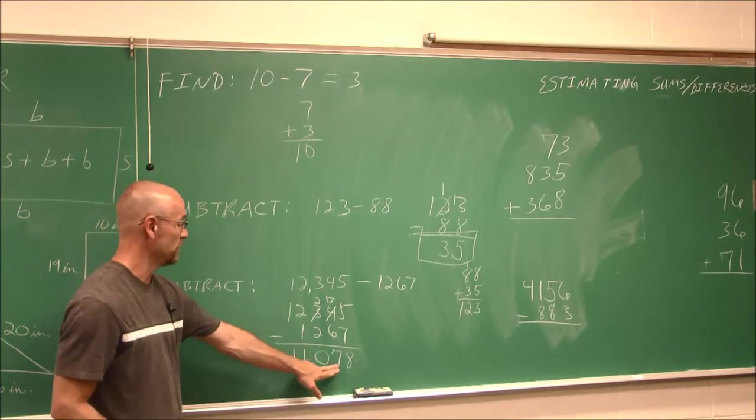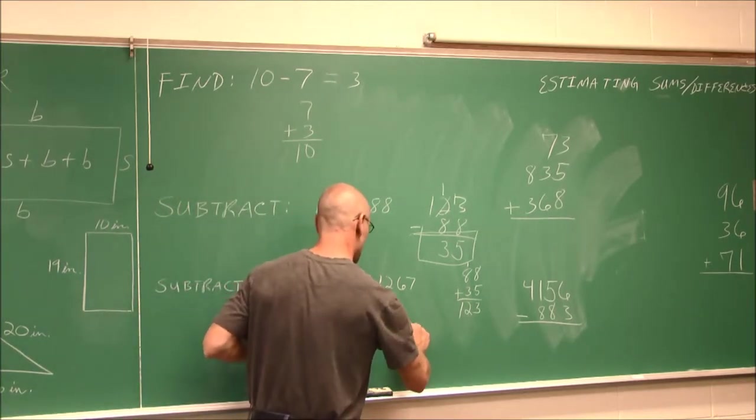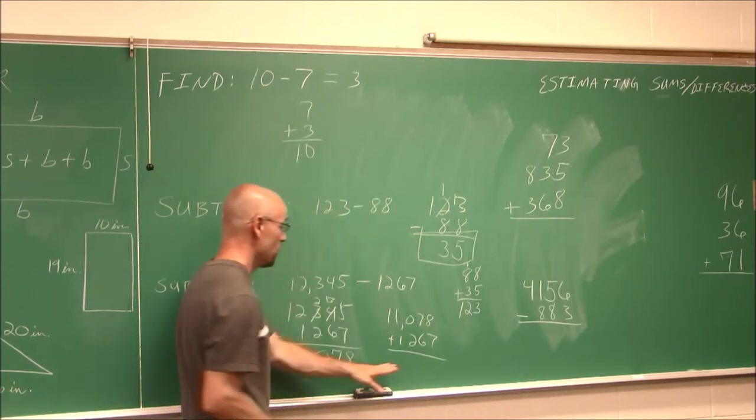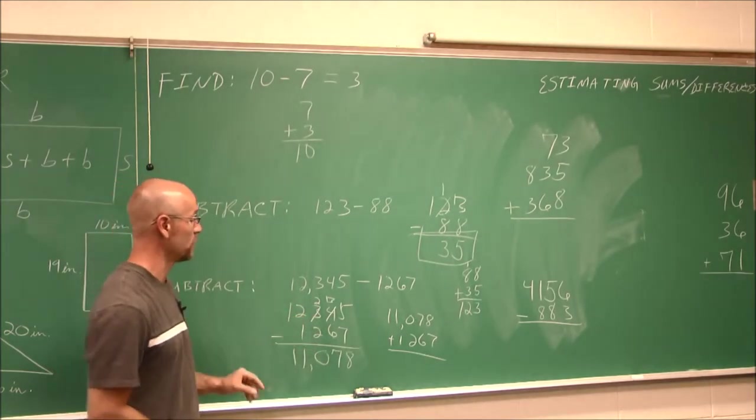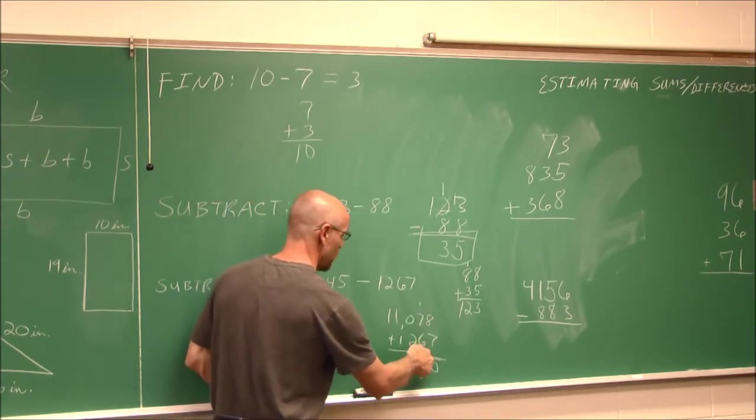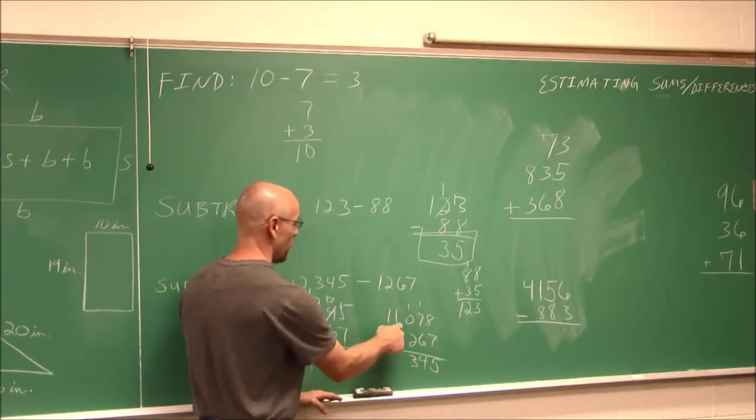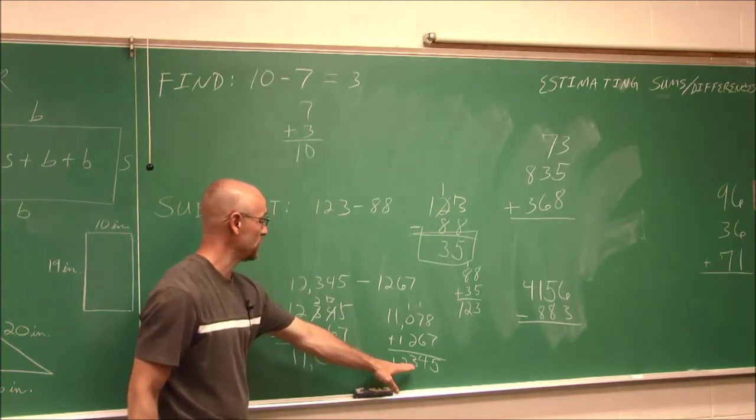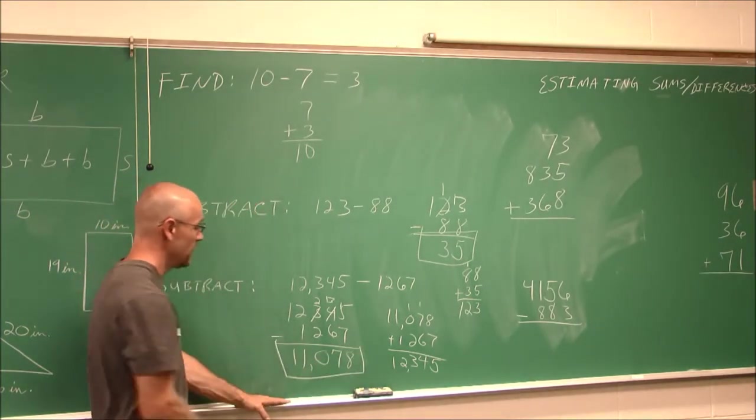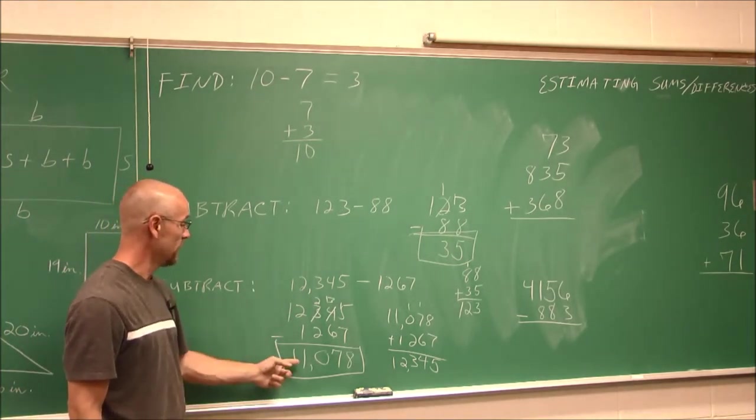So I get 11,078, and I want to check my work. So I'm going to add these two, kind of work it backwards. 11,078 plus 1,267. My sum should be this value. So let's see. 8 and 7 is 15, carry the 1. 7 and 6 is 13, plus 1 more is 14, carry the 1. 2 and 1 is 3. 1 and 1 is 2 and 1. And I get 12,345, which was the original number I started with. So I checked my work. I know for a fact that this is the difference of the two numbers I was asked to subtract, 11,078.